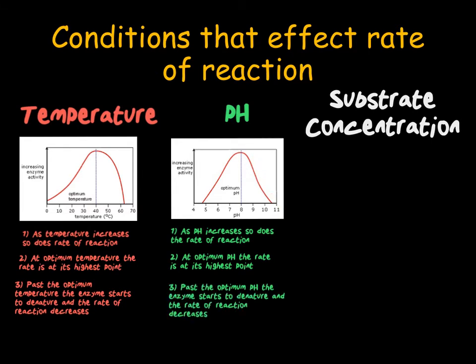However, unlike temperature, too low a pH will also cause denaturing, whereas too low a temperature will just lower the rate of reaction due to the particles having less energy.